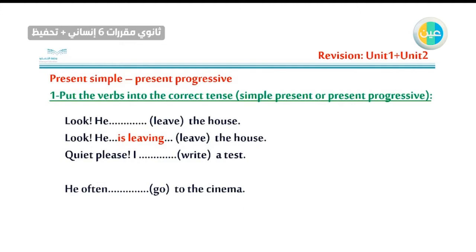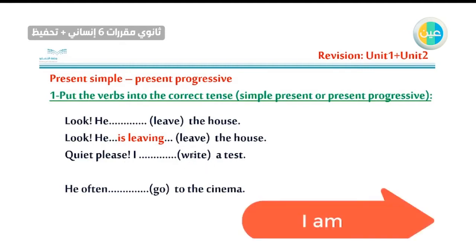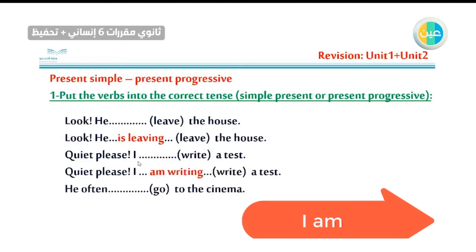Number two: 'Quiet please. I write a test.' We are talking about something happening now. So it's present progressive. Subject + helping verb + main verb with -ing. The suitable helping verb for 'I' is 'am.' So: I am writing. I am writing a test.